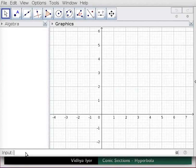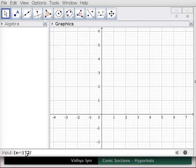To type the caret symbol, hold the Shift key down and press 6. For the first fraction, type the numerator as X minus H in parenthesis, caret 2, then type division slash. Now, type the denominator of the first fraction as A, caret 2, followed by minus. For the second fraction, type the numerator as Y minus K in parenthesis, caret 2, then type division slash. Now, type the denominator of the second fraction as B, caret 2, followed by equal sign 1. Press Enter.